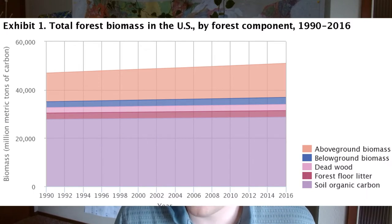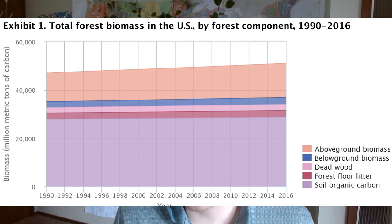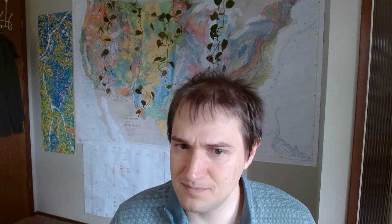Ever since then, U.S. forests have been sequestering more and more carbon. The forests across the entire country are recovering from this period of very heavy deforestation. But timber demand did not go down inside the United States. All we did was offset the location that we got that timber from. Now we get timber from places where liberals in California and Oregon can't tie themselves to trees — we get timber from Brazil, from developing nations. So effectively, we preserved our forest at the cost of preserving other people's forests.